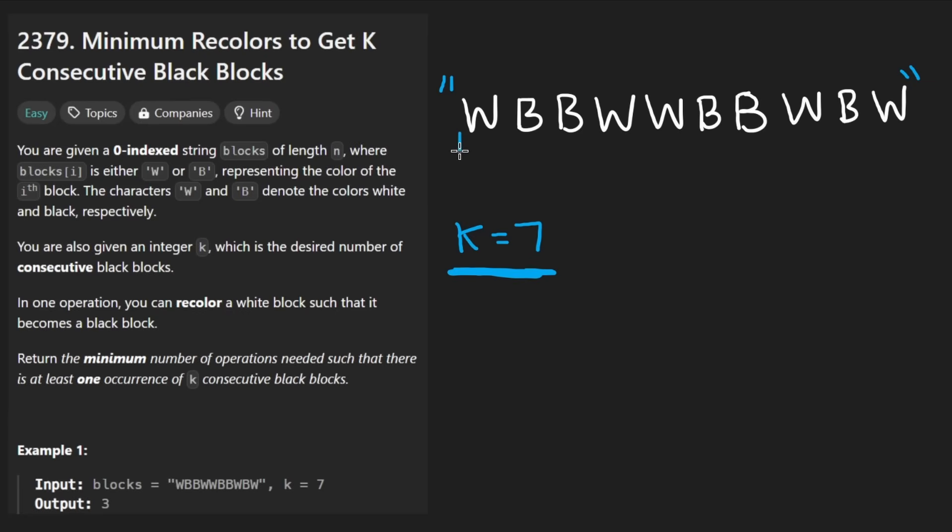What we are doing is looking for a substring or you could call it a window such that for us to make this entire window of size k. The window has to be of size k, so right now you can see the window is 7 long.